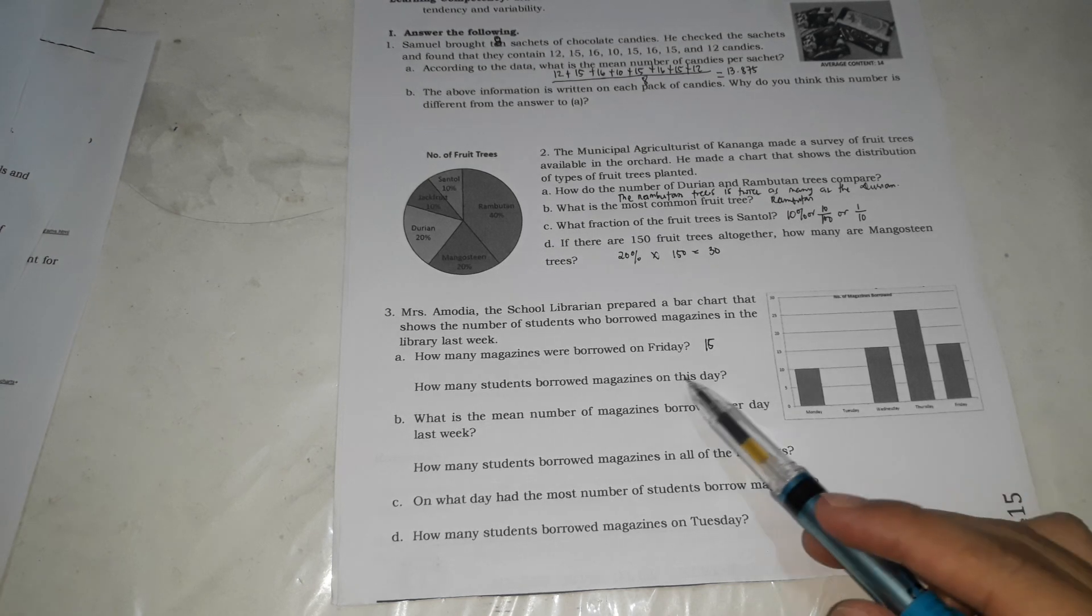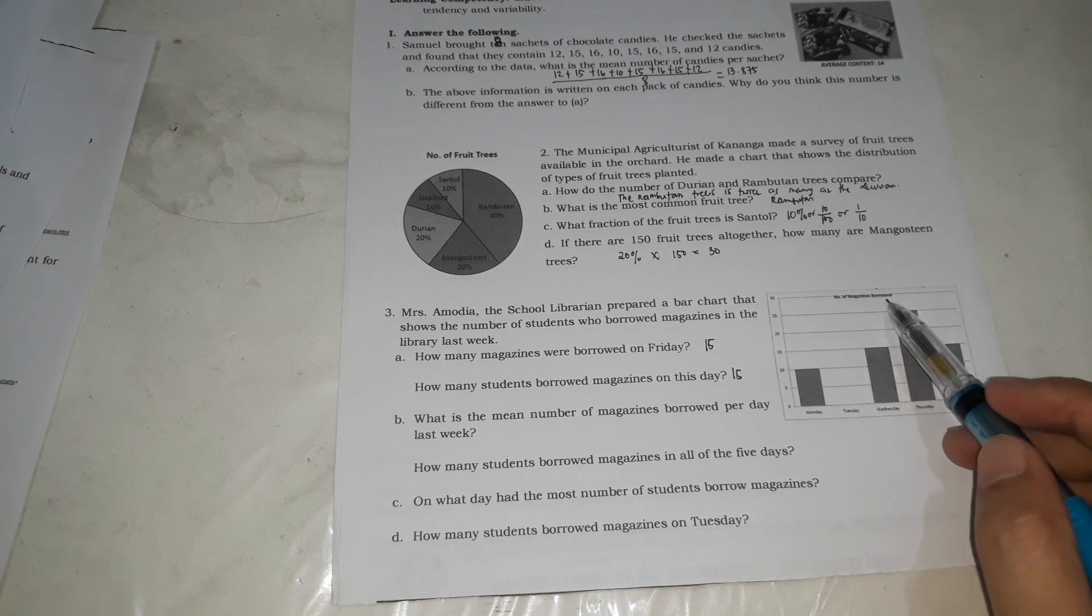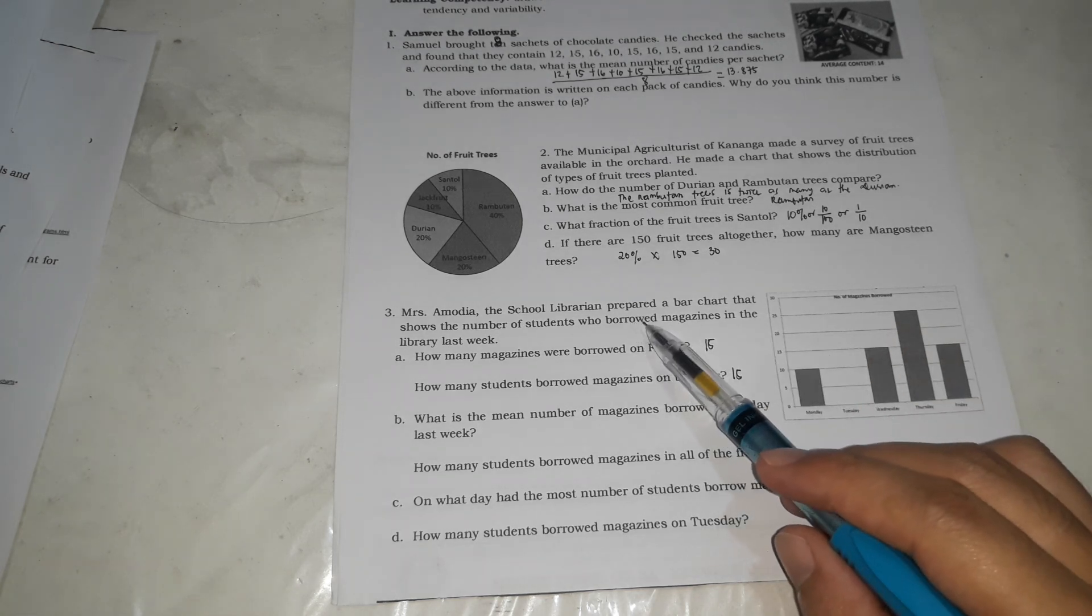How many students borrowed magazines on that day? 15. We are not really sure. In here, number of magazines borrowed. So, 15. However, in dito kasi, it's the number of students. So, we're going to have it. It's 1 per student ang hiram. So, 1 per student na lang. Thinking that it's 1 per student.